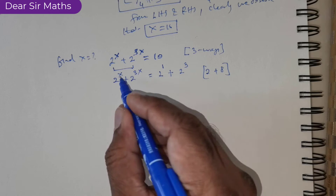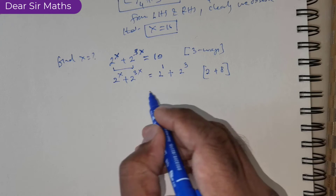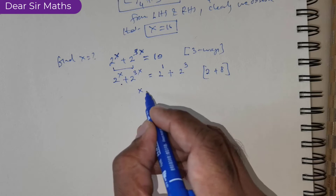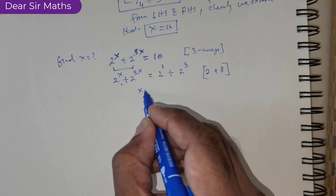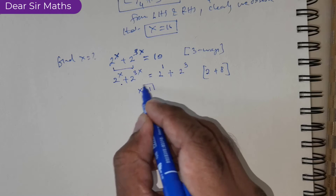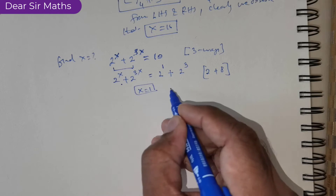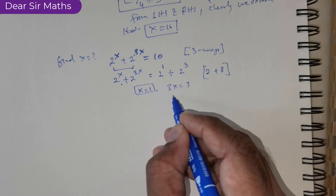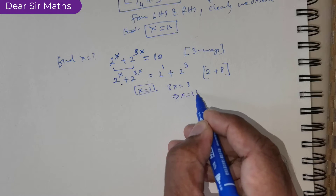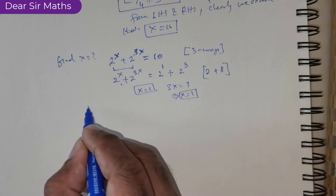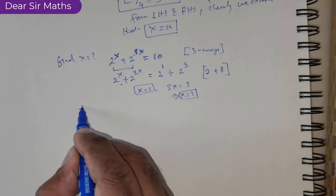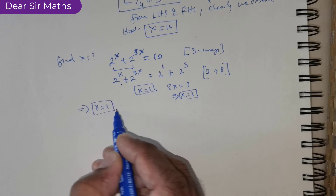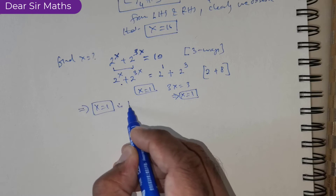Now we can see that if we equate the left versus the right, x is equal to 1 here. And from here 3x is equal to 3, subsequently this means x is equal to 1. So clearly x is equal to 1 is the solution.